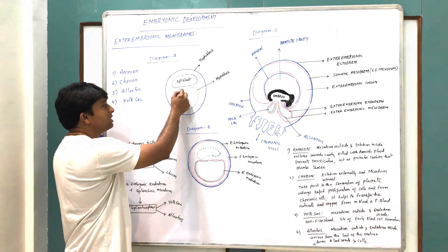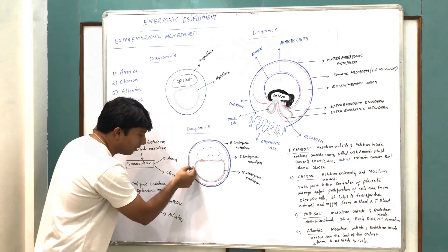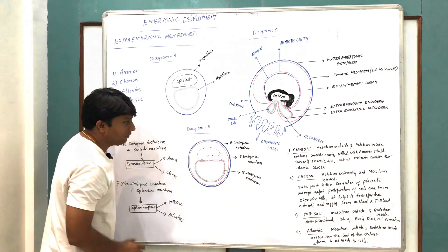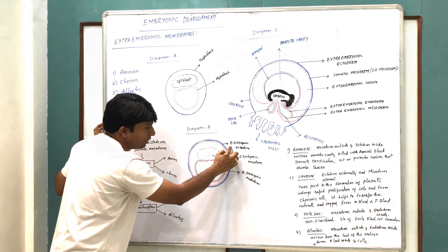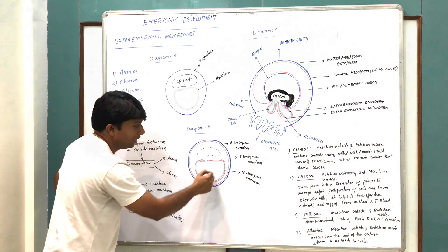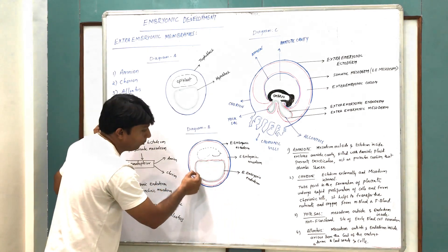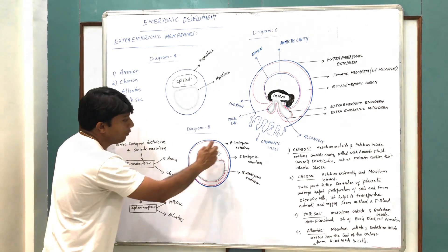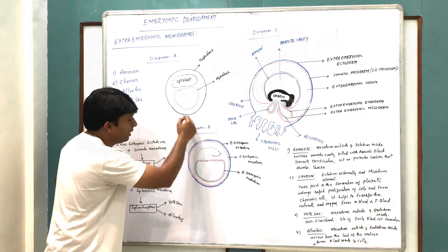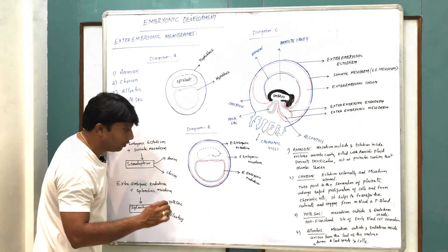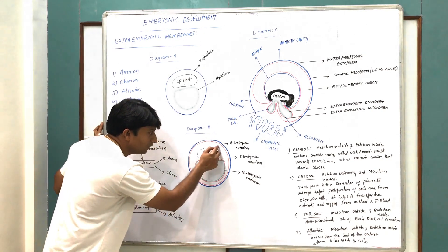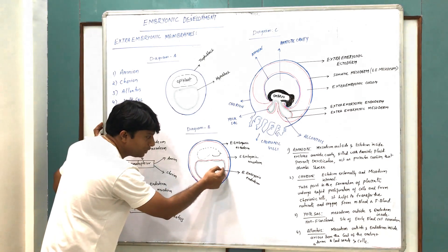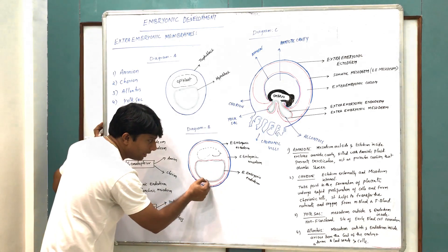Later on, some cells from the hypoblast will form a third layer called the mesoderm. In the later stages of development, the trophoblast becomes extra-embryonic ectoderm (shown in blue) and the hypoblast becomes the extra-embryonic endoderm (shown in green). The third layer developed from the hypoblast is called the extra-embryonic mesoderm, and this mesoderm lies towards the ectoderm and also comes to lie below the extra-embryonic endoderm.